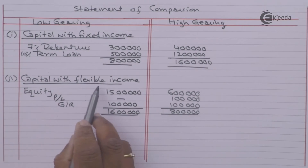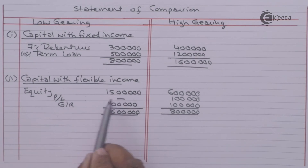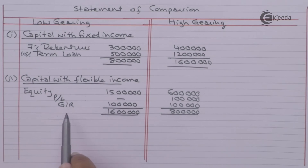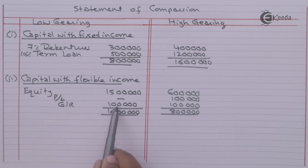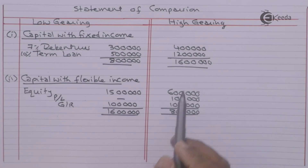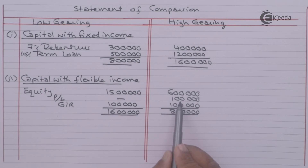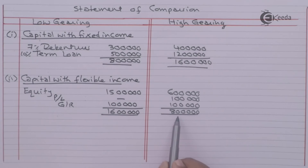For the capital with flexible income: in the low gearing case, equity 15 lakhs plus general reserve 1 lakh gives 16 lakhs. In the high gearing case, equity 6 lakhs plus profit and loss account 1 lakh plus general reserve 1 lakh gives 8 lakhs.